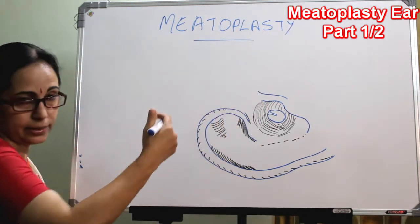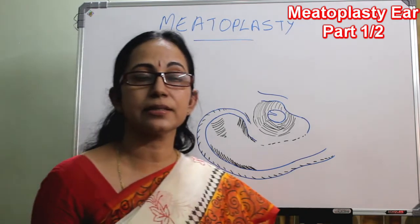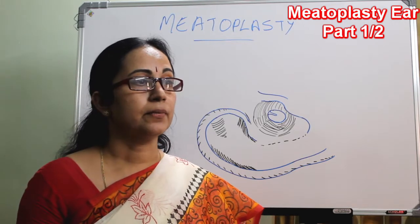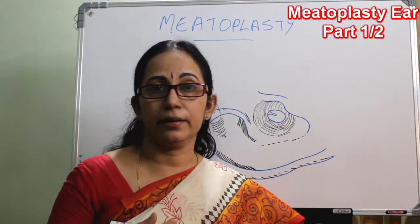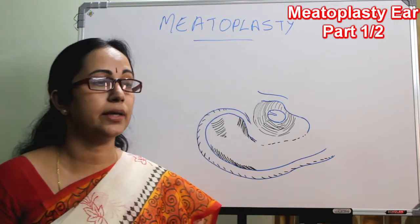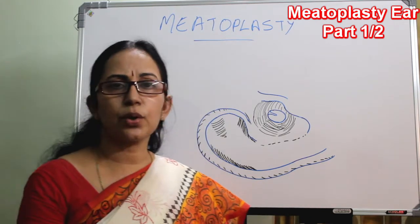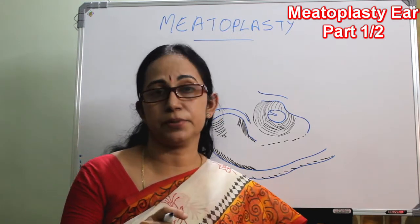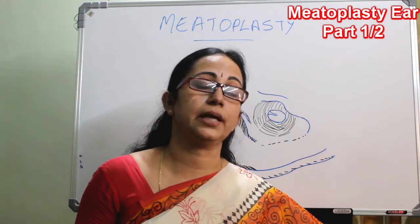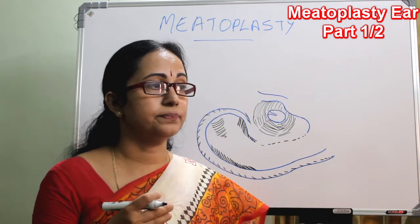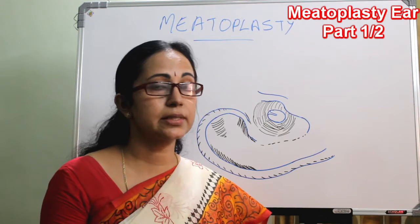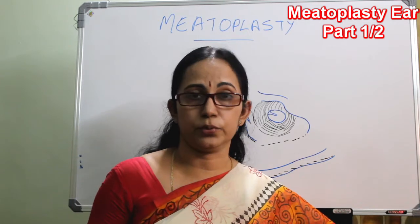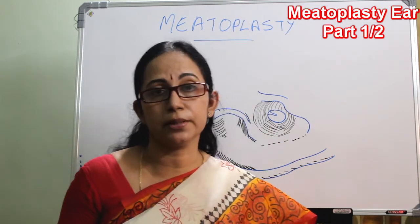I'll explain this under the headings of indications, advantages, limitations, the different types of meatoplasty, the commonly done methods, and also the technique of those methods. This topic is not explained in most major textbooks. If you want a detailed description of all types of meatoplasty, you can study Mirkats — the textbook by M. Tose — and also Robin Smith for some techniques.